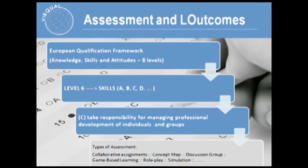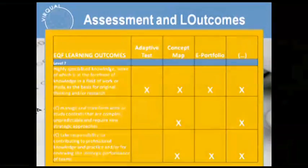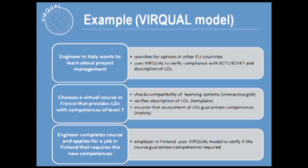Another key aspect is the assessment of learning outcomes. We have an example for the European Qualification Framework: at level six, a learning outcome is described as 'take responsibility for managing professional development of individuals and groups.' We propose a matrix of assessment methods matched to each of the learning outcomes described in the qualification framework. This is followed by a description of each of these steps in the context of the teacher, the institution, and the students.